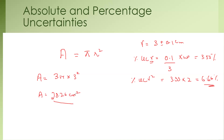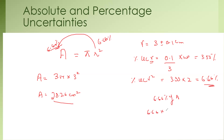The value of the area is 28.26 cm². Since the area is calculated using R², the total uncertainty in the area is also 6.66%. So, 6.66% of 28.26 is 6.66 multiplied by 28.26 divided by 100, which gives 1.88. So the uncertainty is approximately ±1.88 centimeters squared.